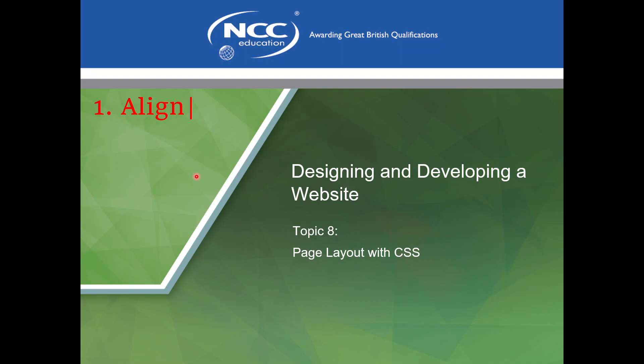The first one is alignment. Alignment is ensuring that every content in your web page is aligned to other contents within the same web page. Alignment is done using page layout, which is what we're going to look at today. The other one is contrast — when you're doing design, the important stuff should be very clear. For example, the title of a course has been made bolder. You can make something contrast by making it bolder, a different color, or bigger in size.